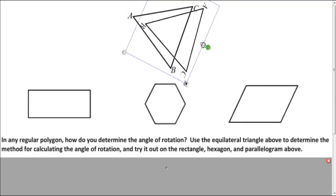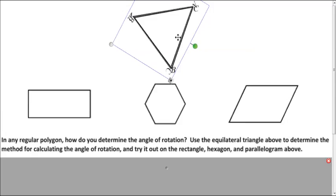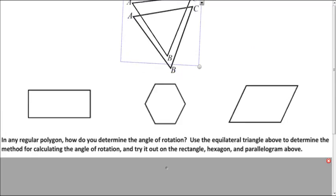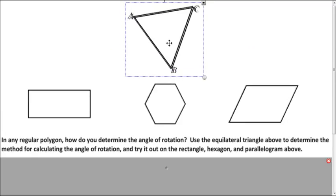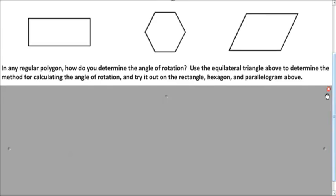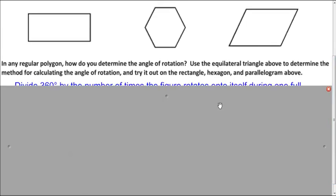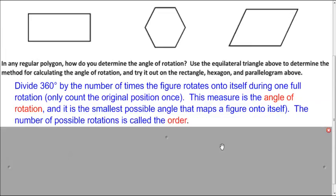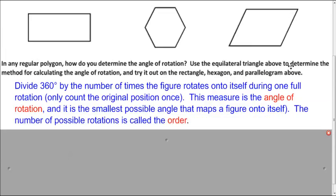And if we keep going, we should get two. And finally, back to the original one for three. So there's three different rotations we can do that map it back onto itself. And 360 degrees. So how many degrees must be in each rotation? 120, right? Divide 360 by three. And here is how we did that. So you just divide 360 degrees by how many times you can map it onto itself. That is called the angle of rotation.